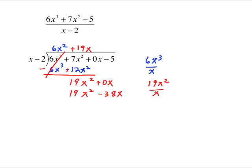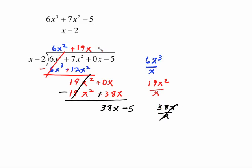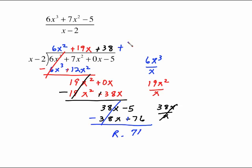We're ready to subtract — draw the line, change the signs. Both cancel out the 19x squareds. 0 and 38 is 38x. Bring down your last term of negative 5 and start dividing again. 38x over x cancels out, giving us a plain old 38. Multiply 38 times the whole divisor: 38x minus 76. Draw the line, change those signs — cancels out, and we're going to get a remainder of 71. So put plus 71 over x minus 2. Be sure you put the plus in between here — don't leave that fraction just hanging out there.